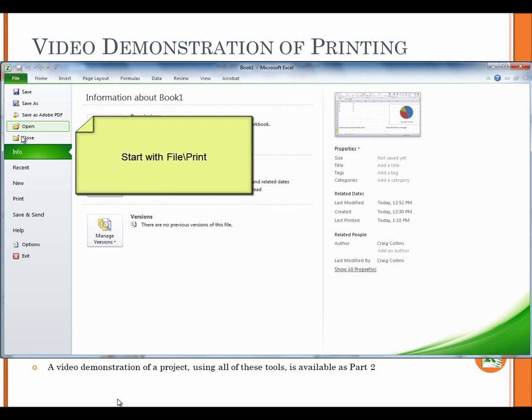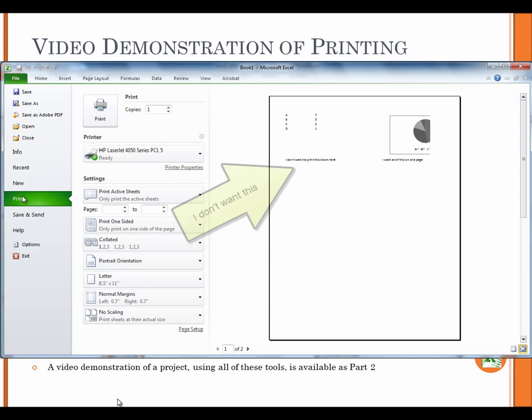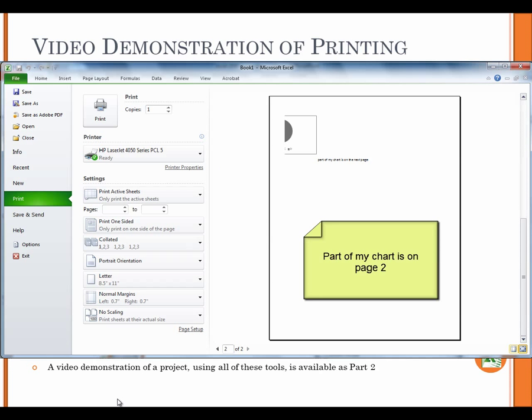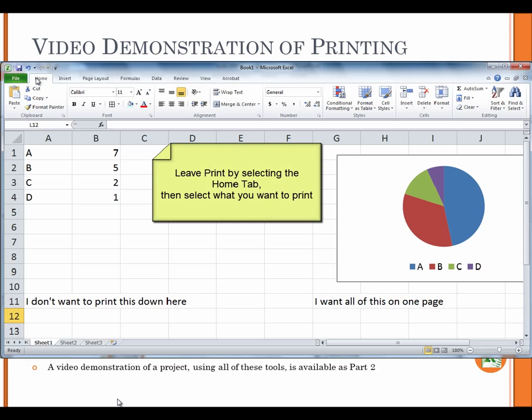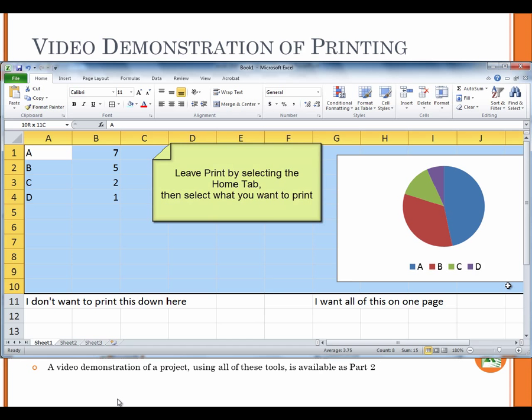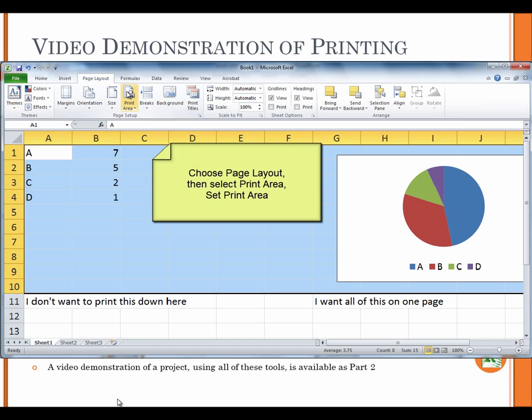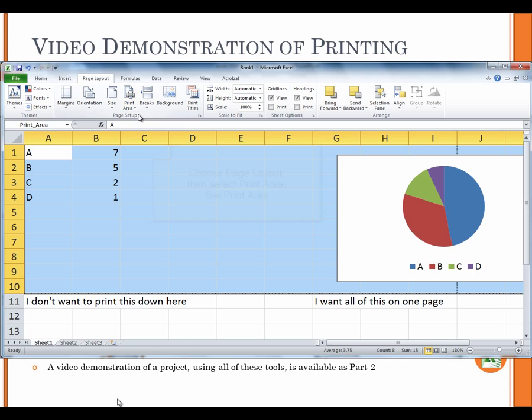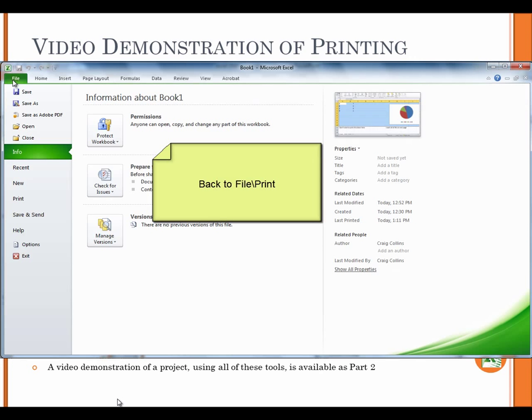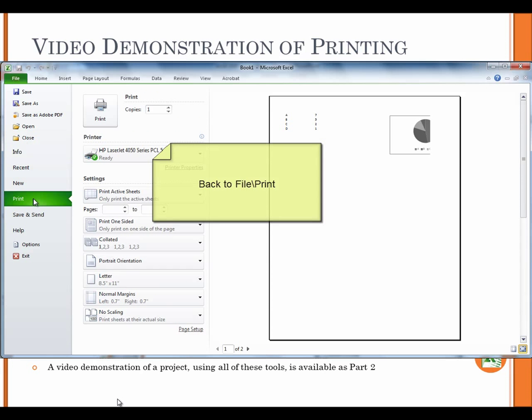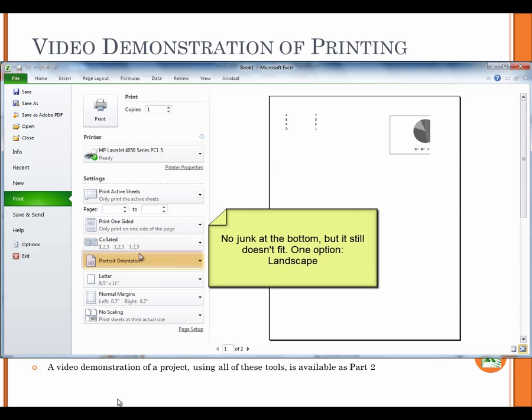A video demonstration follows. Start with file, print. I don't want this. Part of my chart is on page 2. Leave print by selecting the home tab. Then select what you want to print. Choose page layout. Then select print area. Set print area. Back to file print. No junk at the bottom, but it still doesn't fit.